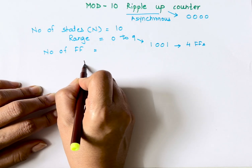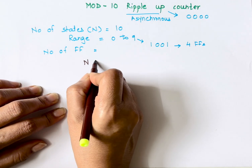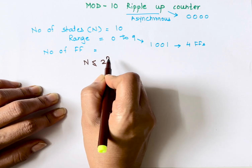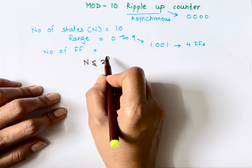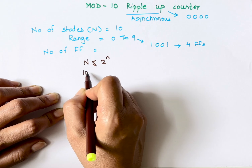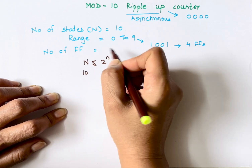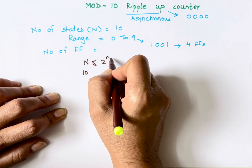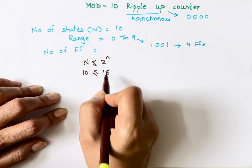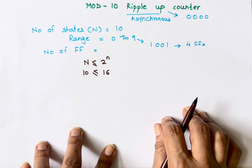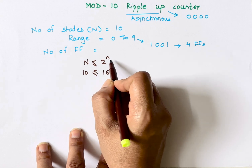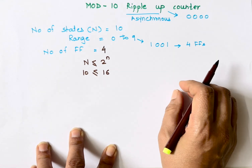Using the formula N ≤ 2^n, if we put n = 3, then 2^3 = 8, and 10 is not less than or equal to 8. So we try n = 4: 2^4 = 16, and 10 is less than or equal to 16. This verifies the condition, so n = 4, meaning the number of flip-flops is 4.